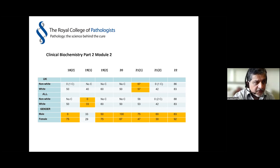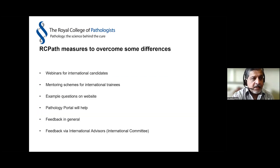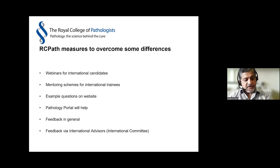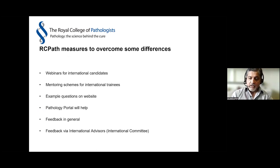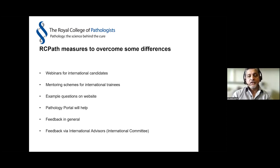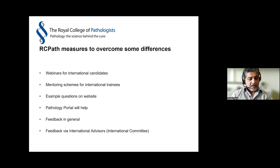That was a synopsis of the kind of data we can gather - there's much more we could obtain. In terms of measures the RCPath has tried to put in place: a few years ago we started looking at overseas candidates, providing webinars to explain what the exams are about, their formats, and what candidates can read up on or practice to have a better chance. There is also a mentoring scheme for international trainees facilitated by the Royal College.